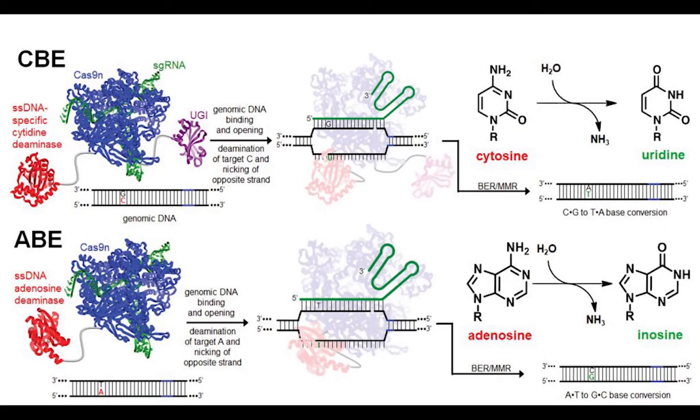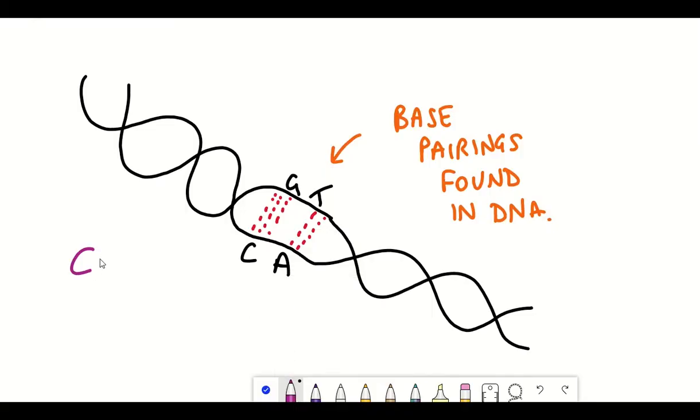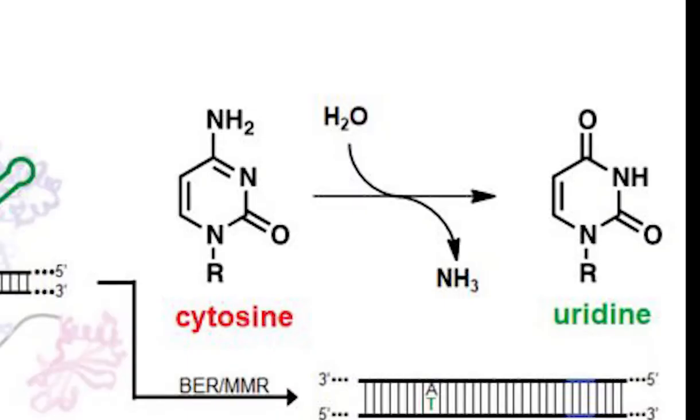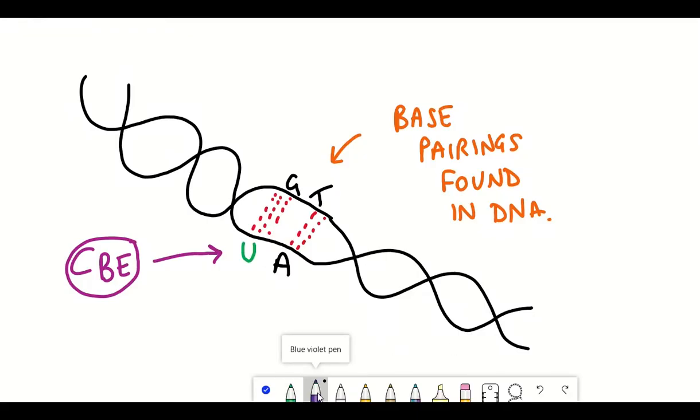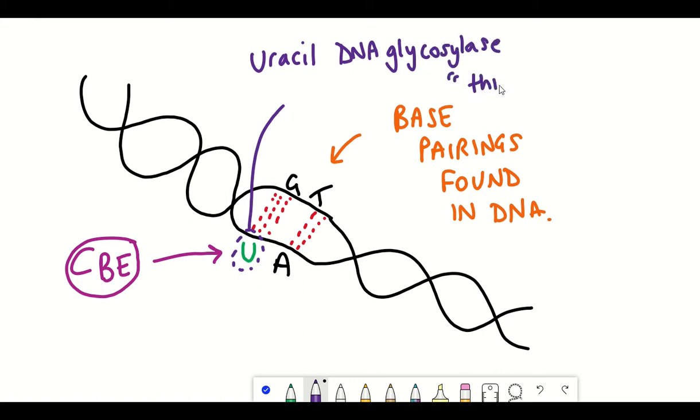So there are currently two different classes of base editors, adenine-based editors or cytosine-based editors. And so cytosine-based editors work by having a cytidine deaminase, which removes an amine group from cytosine, which converts cytosine into uracil. So although uracil has the same base pairing properties as thymine, so it pairs with adenine, it belongs in RNA, not DNA. So the uracil base is normally cut from DNA with the help of an enzyme called uracil DNA glycosylase, and then it's replaced with cytosine.